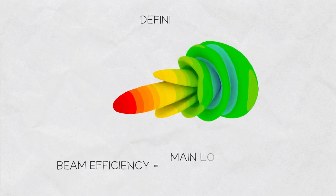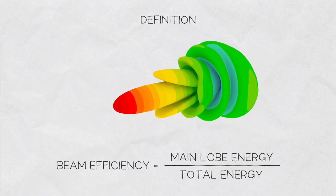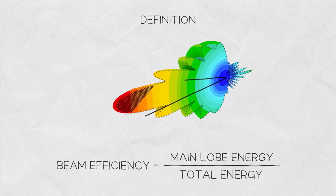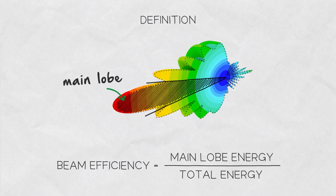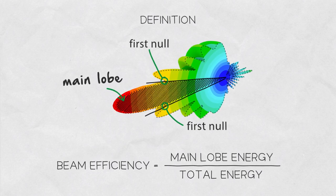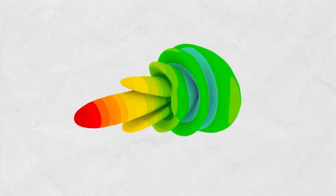Beam efficiency tells us what portion of the total energy an antenna radiates is contained within the main lobe, where the main lobe is defined up to the first null of the radiation pattern. In other words, beam efficiency is a measure of side lobes of an antenna.